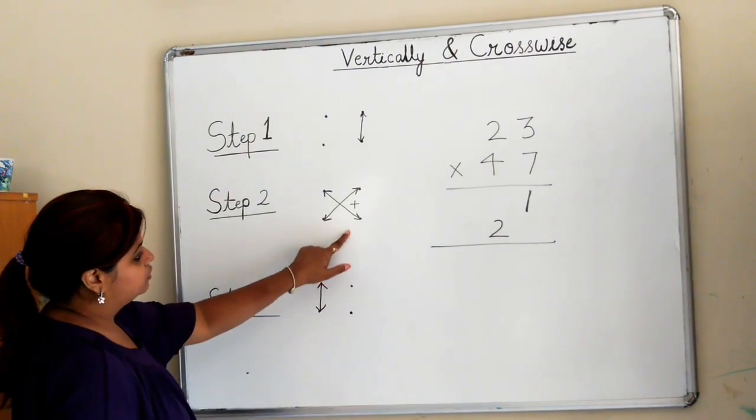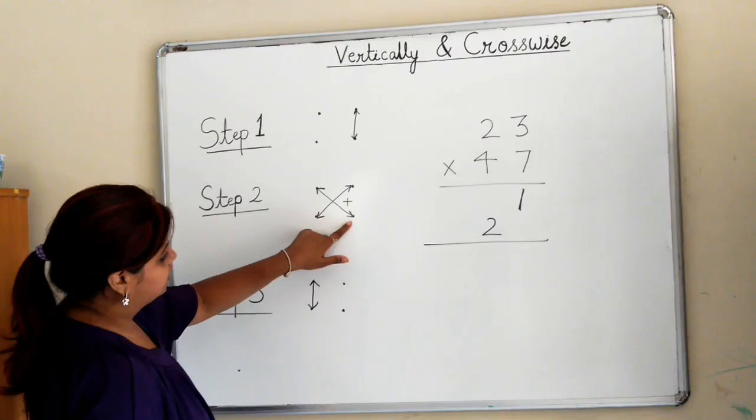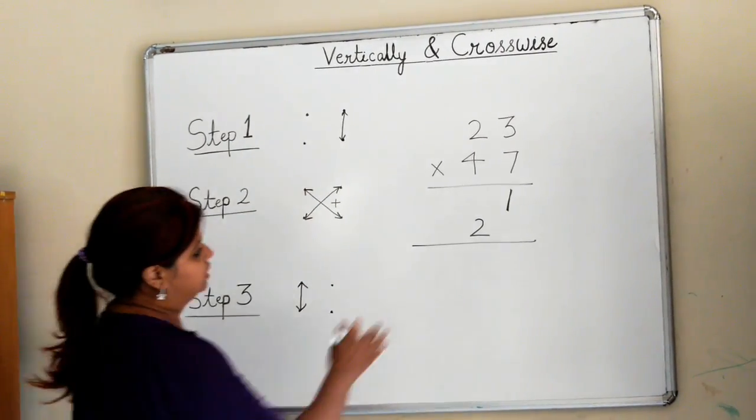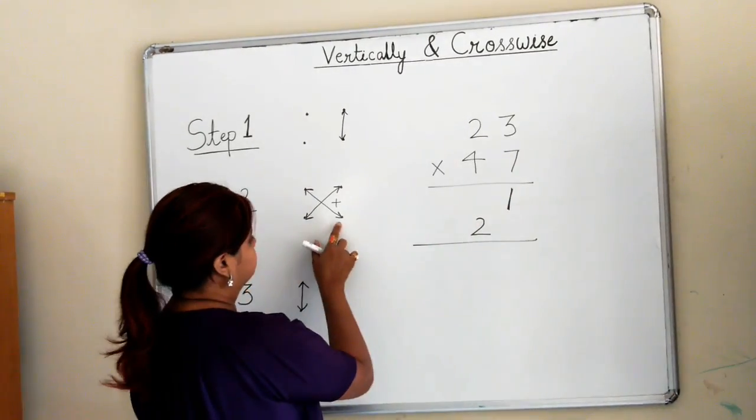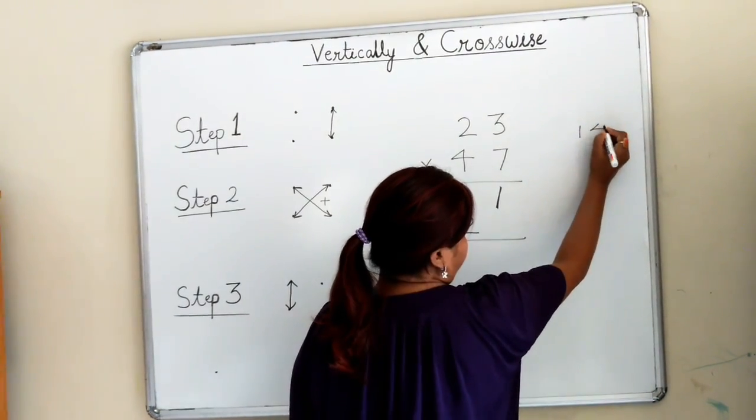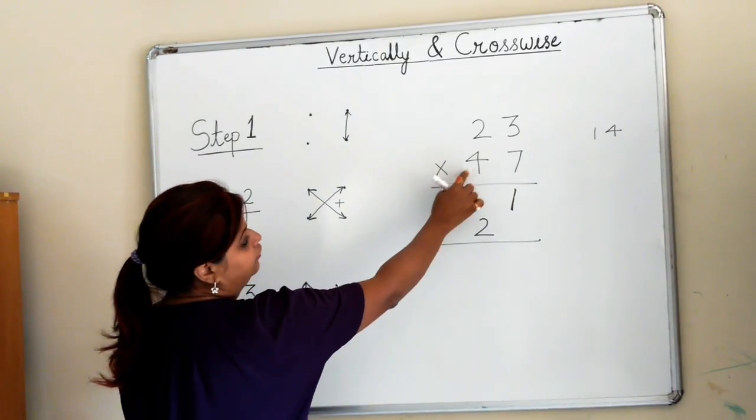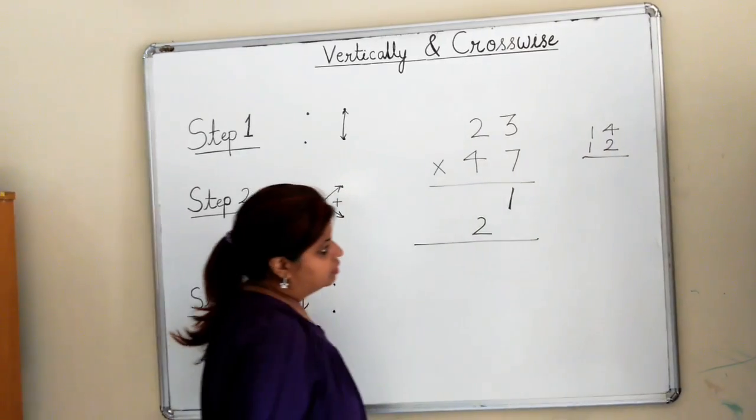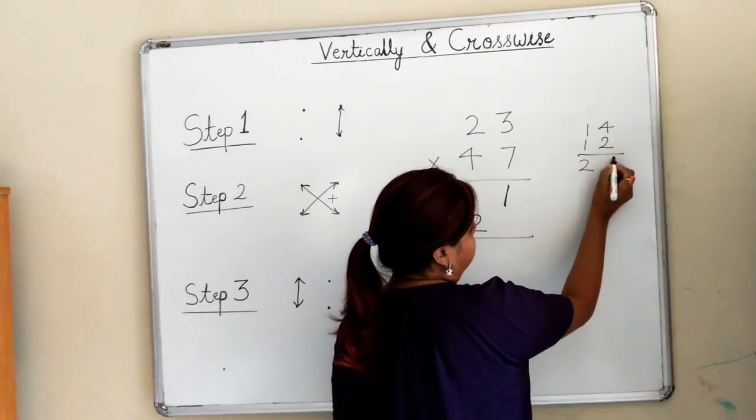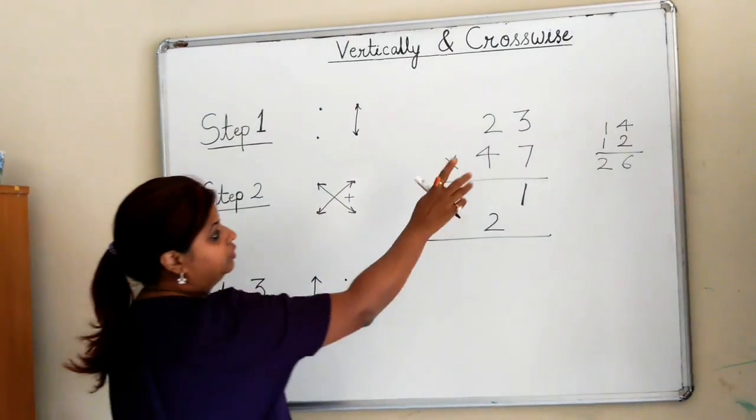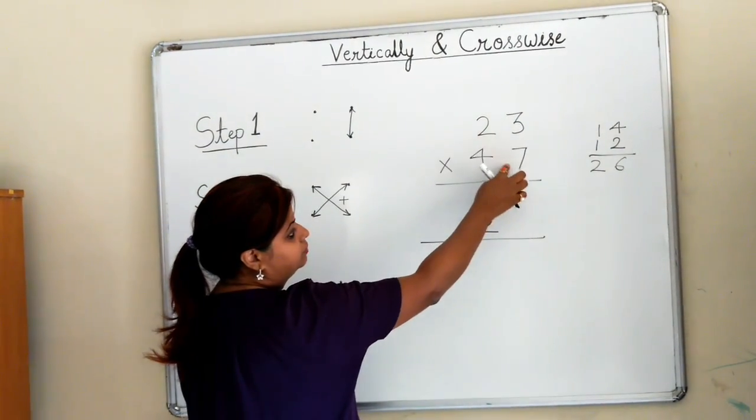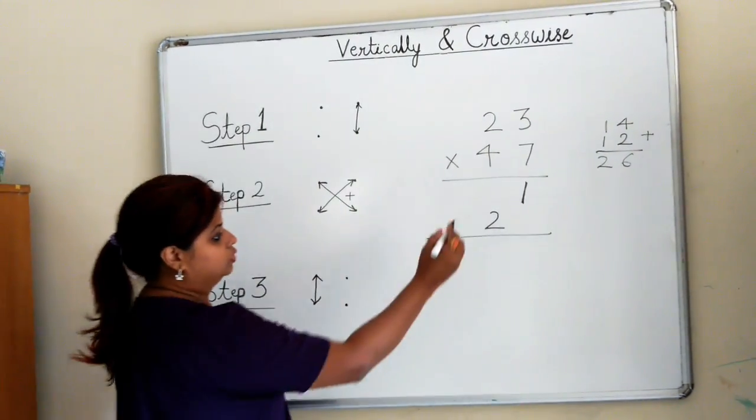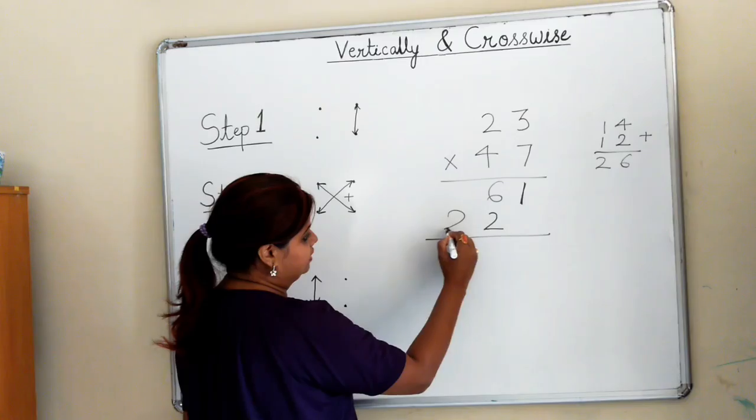Now step 2. The arrows connect the units and tens digits with a plus sign in between. 7 twos are 14, then 4×3 is 12. When you add, you get 26. So what you did was cross multiply the numbers and add them. You get 26, so you keep 6 here and carry 2 over.